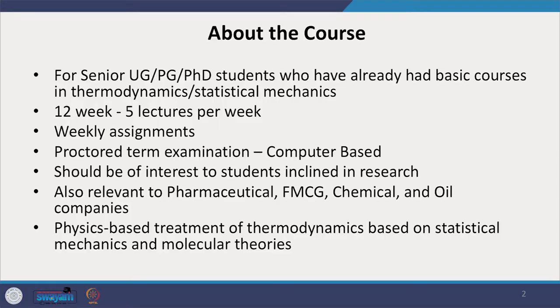For chemical engineering students, you should have done either one or two courses in your first or second year, and other students may have done so also in your undergrad curriculum. This course is going to be of 12 weeks; we will have five lectures per week, I will give you weekly assignments, and then we will have a proctored end-term examination.